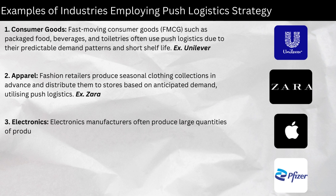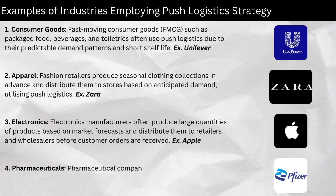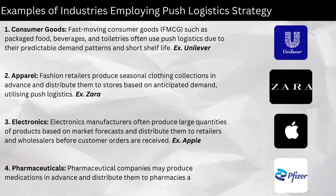Three, electronics — electronics manufacturers often produce large quantities of products based on market forecasts and distribute them to retailers and wholesalers before customer orders are received. Four, pharmaceuticals — pharmaceutical companies may produce medications in advance and distribute them to pharmacies and hospitals to ensure availability for patients.